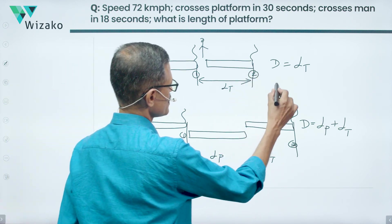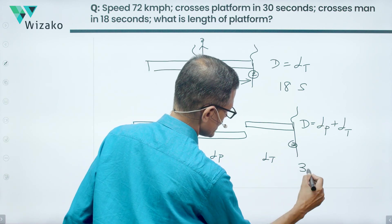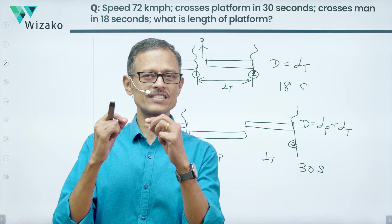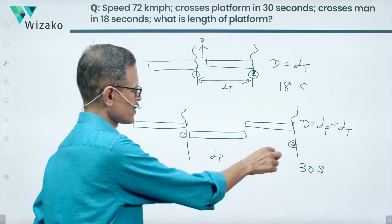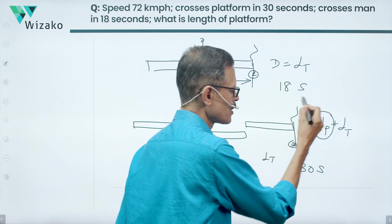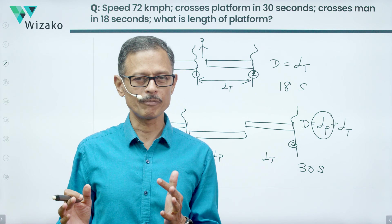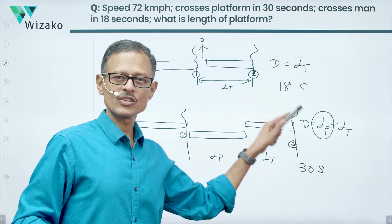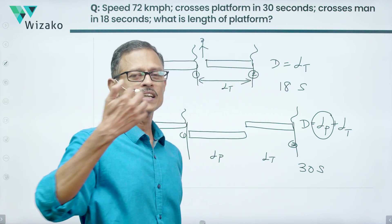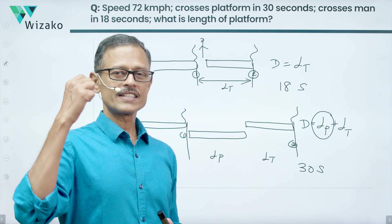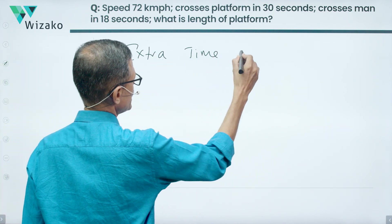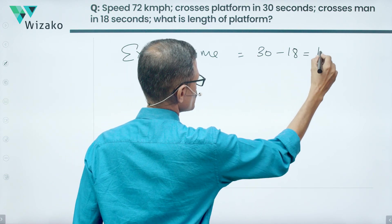To cross the man it takes 18 seconds; to cross the platform it takes 30 seconds. The additional distance when crossing the platform is the length of the platform itself, which is why it takes extra time. The extra time taken is 30 minus 18, which equals 12 seconds.